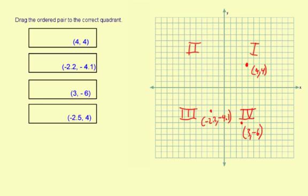And then the fourth point. Negative 2.5 for the X and 4 for the Y. So start at 0, 0. Negative 2.5 for the X means 2.5 to the left. And then 4 up. 1, 2, 3, 4. Right there. And that is negative 2.5 comma 4.